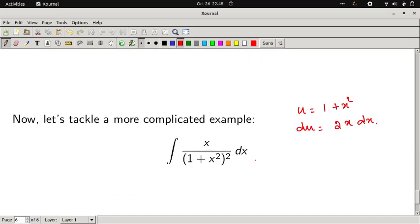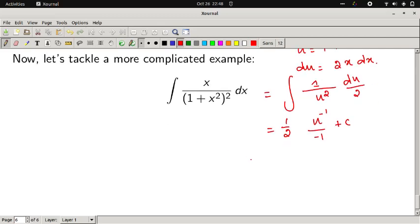Now you can change it in this integral. 1 plus x square whole square is simply u square. I can write du divided by 2 as x times dx. Then I will integrate 1 by 2 outside, so u power minus 1 divided by minus 1 plus c.